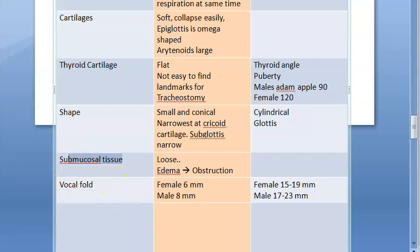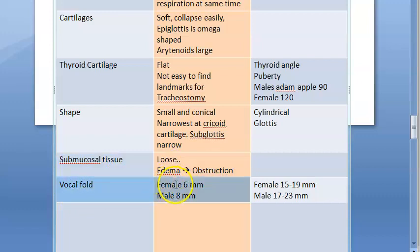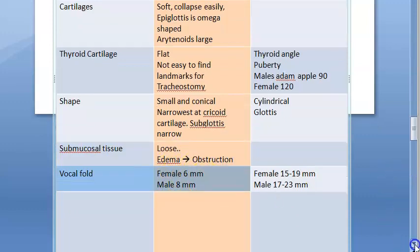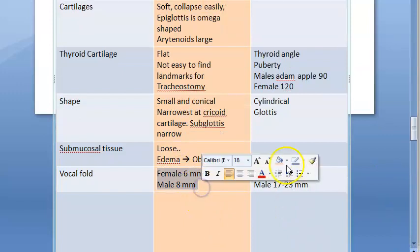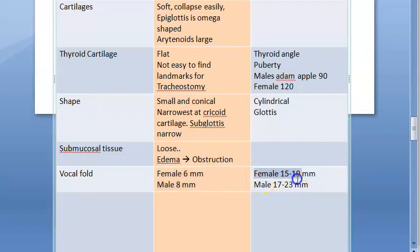The submucosal tissue in the child is loose, so it can undergo edema and lead to obstruction. Regarding the vocal folds, the length will be lesser in a child and longer in adults.